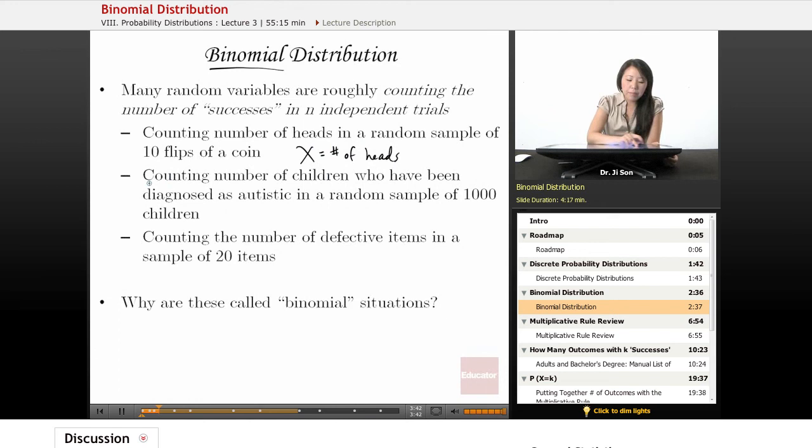Another example is counting the number of children who have been diagnosed as autistic in a random sample of 1,000 children. Here, the random variable X is the number of children diagnosed with autism.